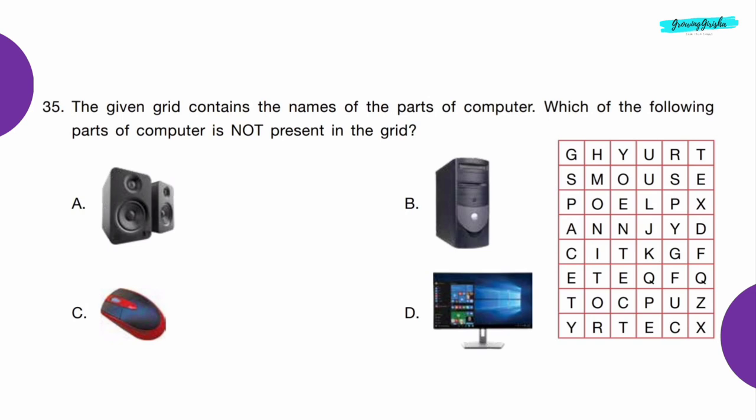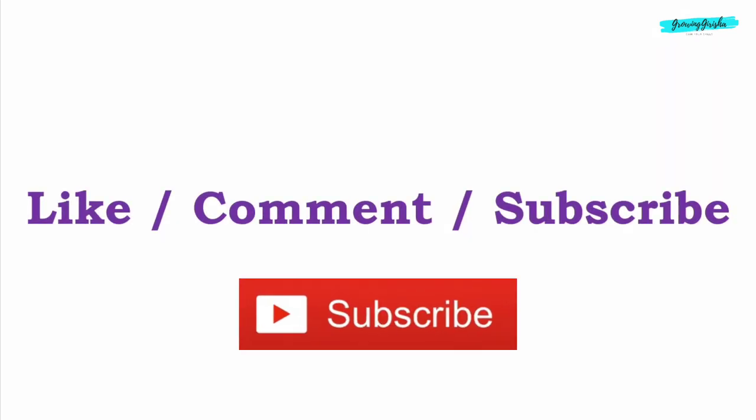Question 35: The given grid contains the names of the parts of a computer. Which of the following parts of computer is not present in the grid? Option A — Speaker.